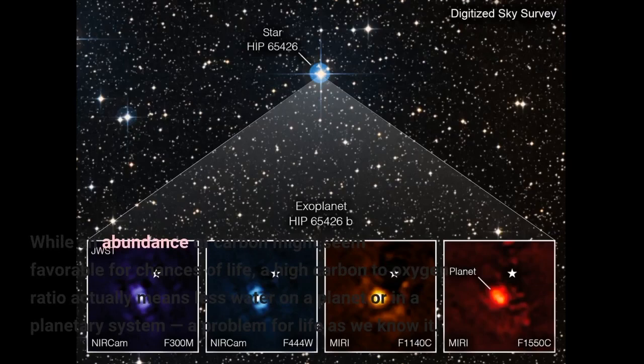While an abundance of carbon might seem favorable for chances of life, a high carbon to oxygen ratio actually means less water on a planet or in a planetary system, a problem for life as we know it.